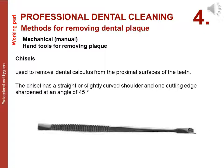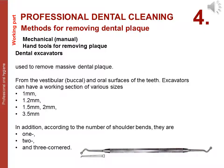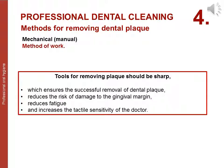Chisels are used to remove dental calculus from the proximal surfaces of teeth; the chisel has a straight or slightly curved shoulder and one cutting edge sharpened at 45 degrees. Dental excavators are used to remove massive dental plaque from the vestibular, buccal, and oral surfaces of teeth; excavators can have a working section of various sizes — 1 mm, 1.2 mm, 1.5 mm, 2 mm, 3.5 mm — and according to the number of shoulder bends, they are 1-, 2-, or 3-angled.